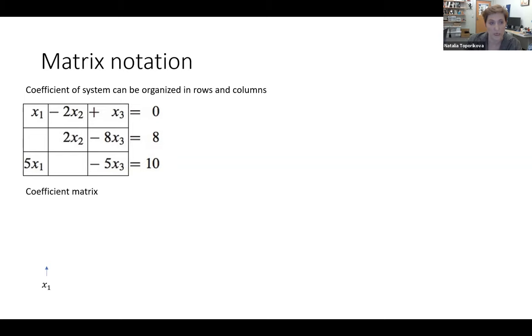Now we can construct what's called a coefficient matrix by taking all the coefficients which relate to variable x1 and putting them in a column. For example, here the coefficient for x1 is one. There is no x2 in the second equation, so the coefficient for x2 is zero. And in the third equation, the coefficient for x1 is five, so we have a nice column. We can repeat this and arrange the column for the variable x2 and then repeat for x3.